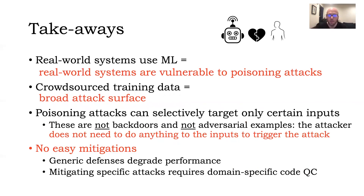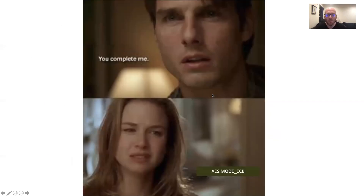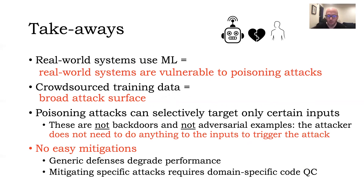On mitigations: obvious mitigations we considered can basically be evaded by the attacker. Generic poisoning mitigations — detecting anomalies in training data representations or fine pruning that removes neurons from the model — don't work well. Either they filter out too many legitimate examples while keeping many attacker files, or they significantly reduce the model's accuracy and make assumptions that may not hold. There is no easy mitigation for this.